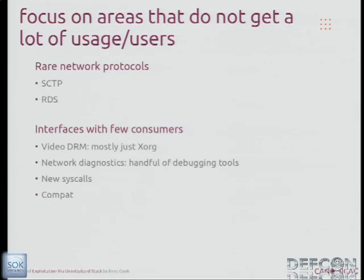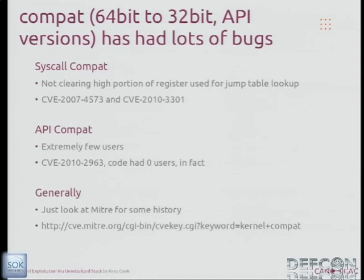I tried to focus on areas that didn't have a lot of usage or users. There have been plenty of vulnerabilities in rare network protocols or interfaces with not a lot of consumers — especially compat. When you're dealing with running 32-bit on a 64-bit system, or you have different API versions like the Linux video stuff, there are a lot of issues. In fact, the issues are so bad that they come back: CVE-2007-4573 and CVE-2010-3301 are the same issue — they just reintroduced it three years later.